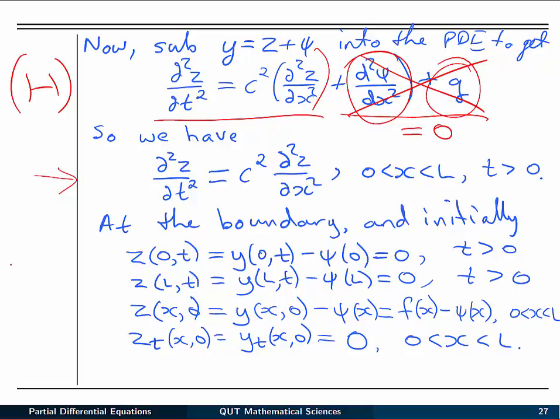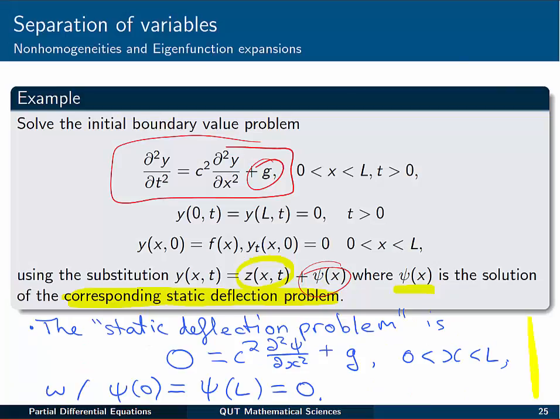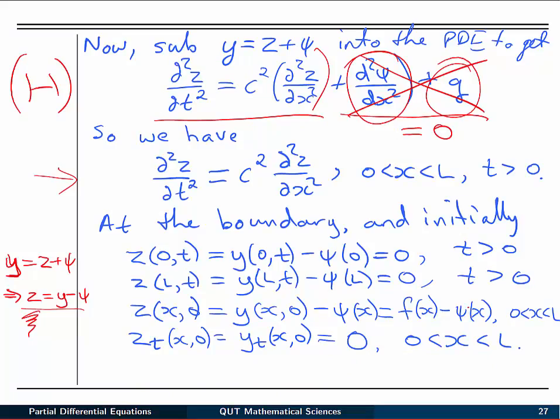We have to be a bit careful at the boundaries. Remember y is z plus ψ, so that means z equals y minus ψ. We can use this relationship to get us the boundary and initial conditions for z. So z at x=0 is y at x=0 minus ψ at x=0. Well, those are both 0, so z is 0. Same at x=L. Then initially z(x,0) is going to be y initially take away ψ(x), so it's the initial condition f(x) given in the question. We've also got the other initial condition. ψ(x) won't play any role here because we're time differentiating, so it's just 0.